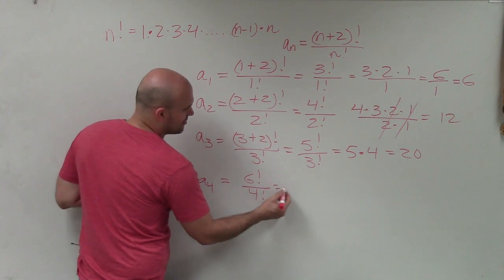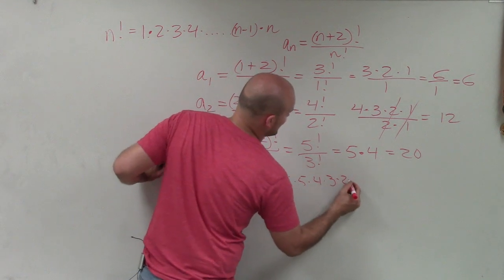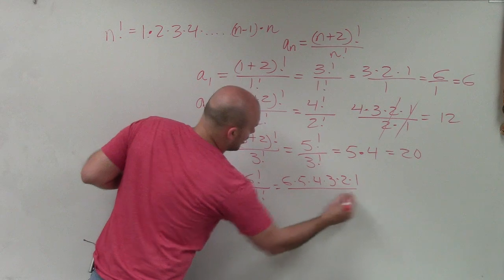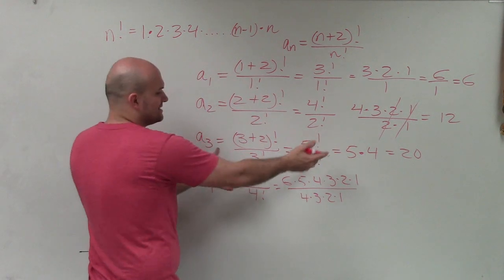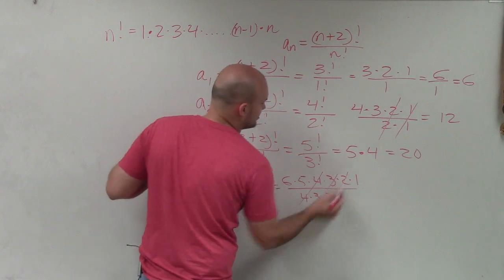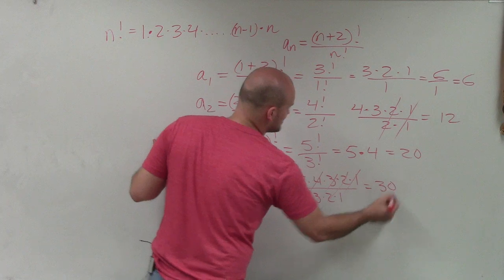Again, let me write this out one more time. 6 times 5 times 4 times 3 times 2 times 1 all over 4 times 3 times 2 times 1. So what I did here is I noticed the 4 factorials, those all divide to 1, so it's just my next two terms, which is 6 times 5, which is 30.